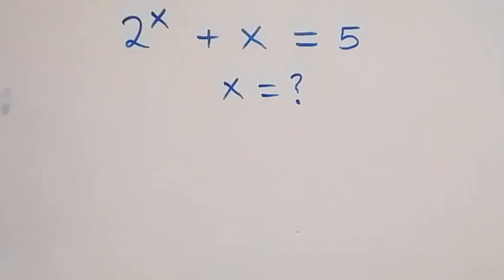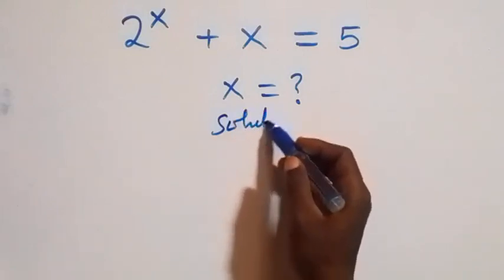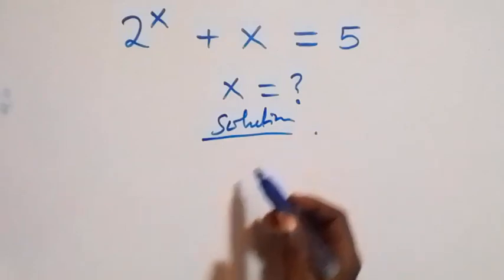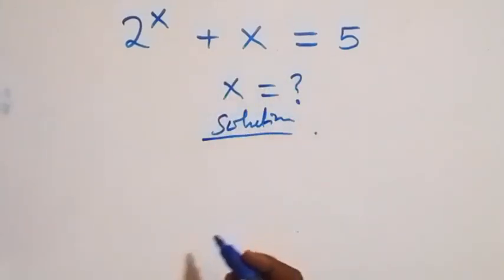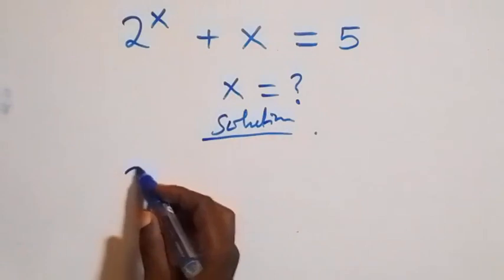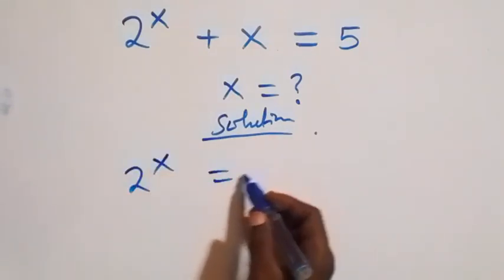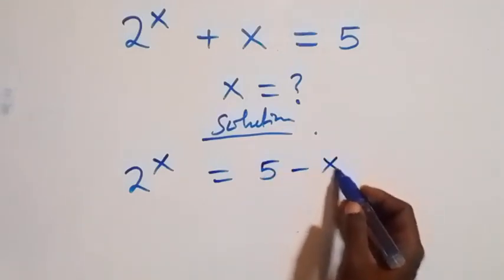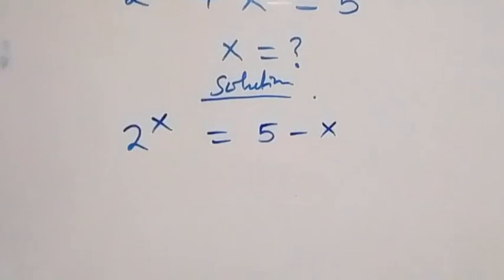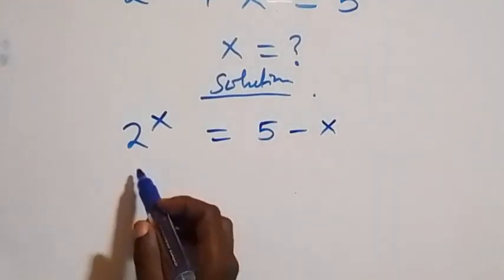Hello, you are welcome. How to solve this nice algebra problem. From what we have here, let's take x to the right hand side, so this becomes 2 raised to power x equals to 5 minus x. From here, the next step we can divide both sides by 2 raised to power x.